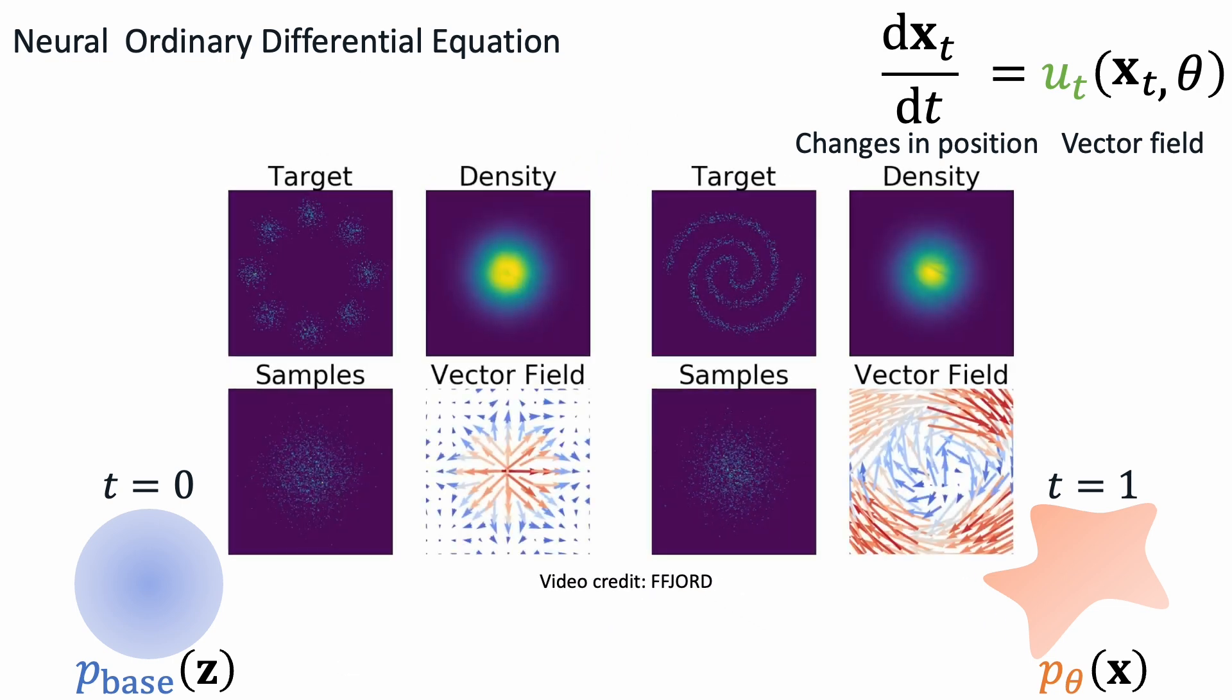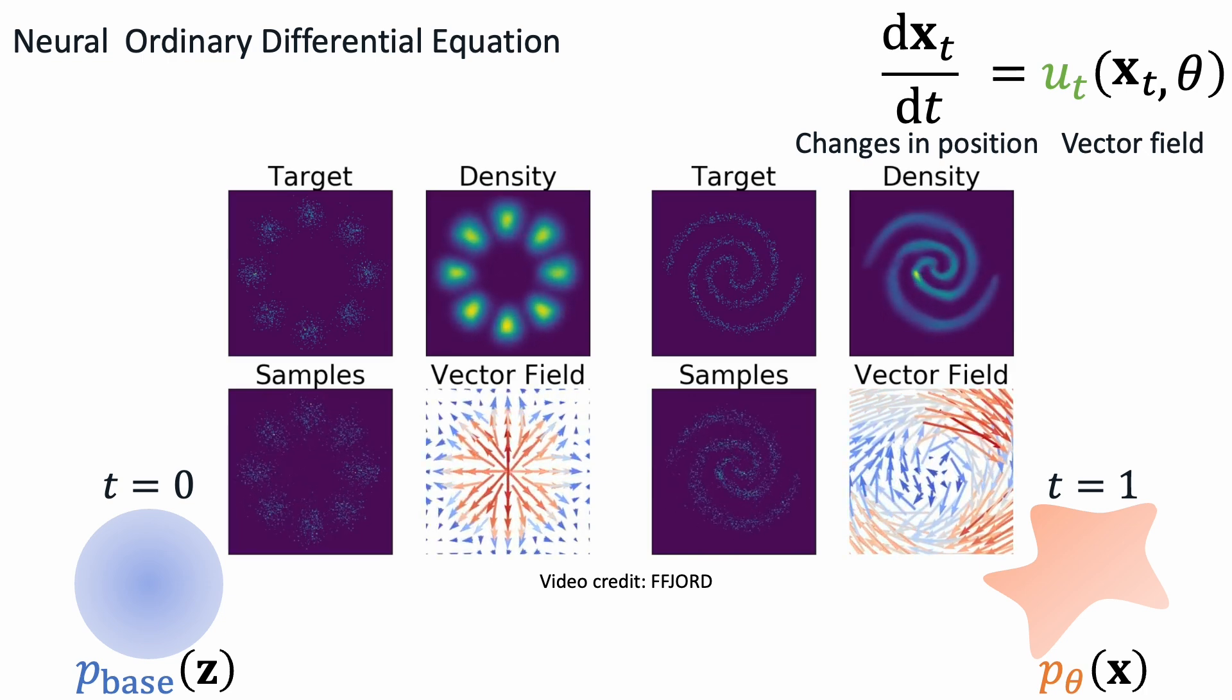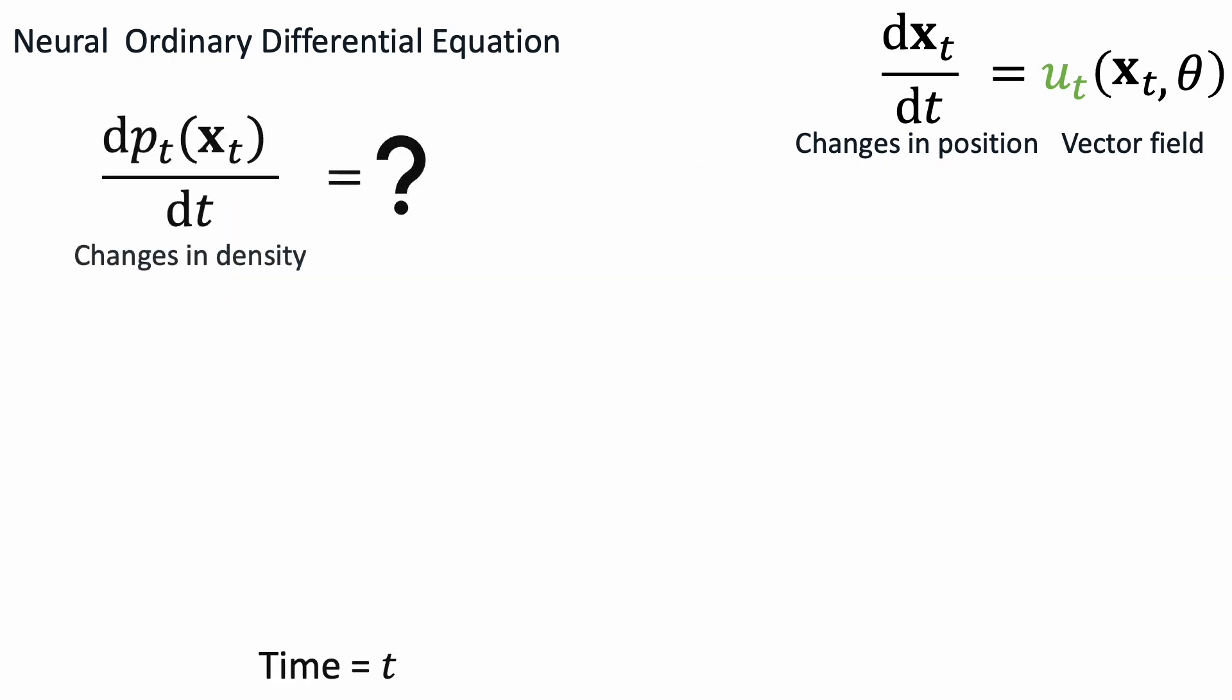Now we understand how vector fields pushes samples around in space. How does the probability density change at a specific location?